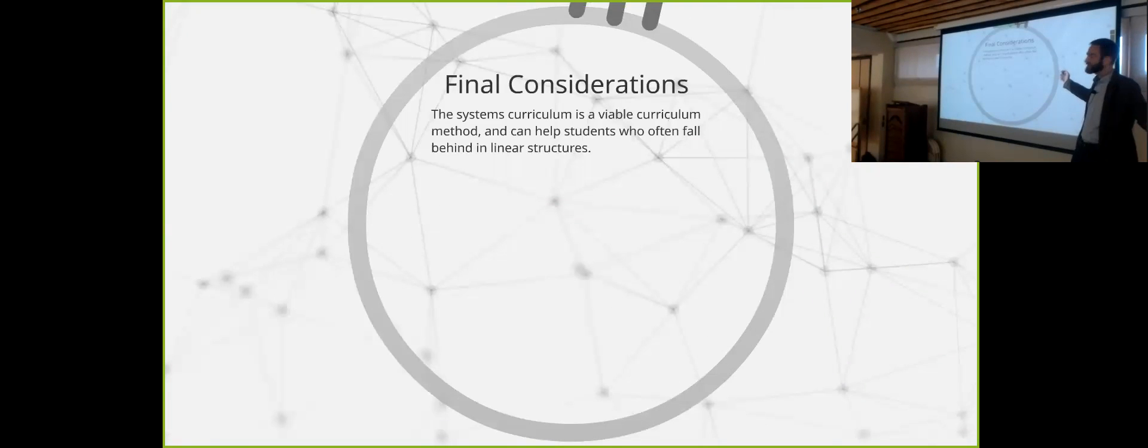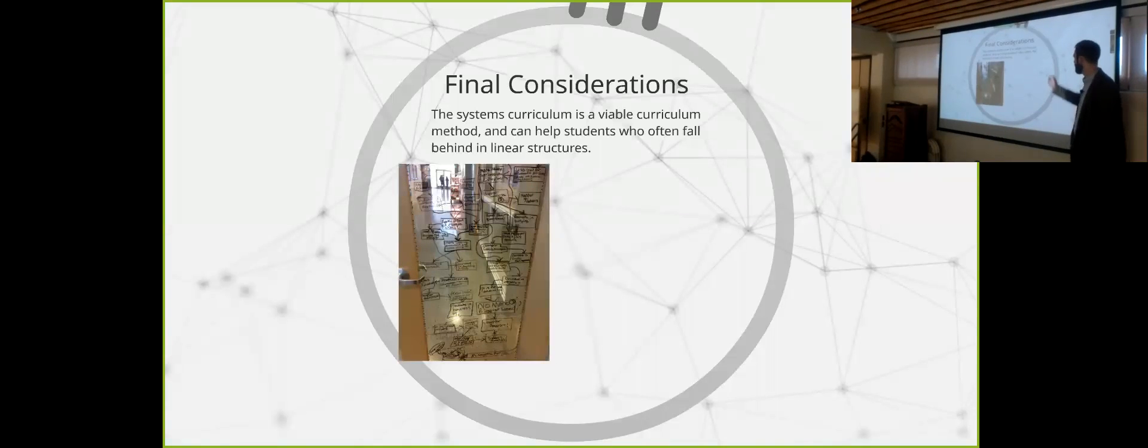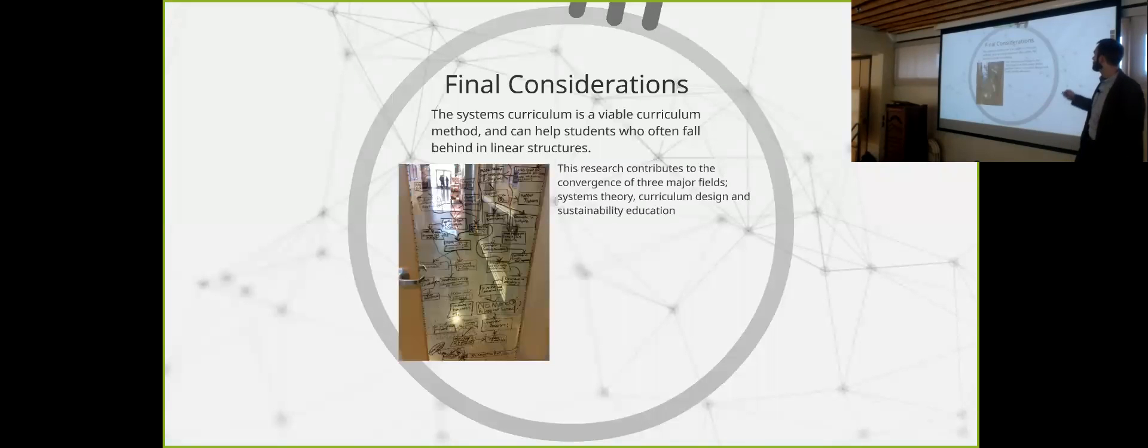This is a viable model. It was awesome. The kids loved it. And this was big for me, that it helped students who fell behind in linear systems. I thought this picture was so cool. I told a kid, look, I need you to go systems diagram me something. I was like, okay. And ran, got an Expo marker, and did that on one of our glass walls. So really cool. I mean, this is not a weird way of thinking. It already is there. You know, I see this research contribute to the convergence of three major fields, systems theory, curriculum design, and sustainability ed. Instead, it offers not only evidence, but it offers a tool. I'm trying to give the field something that people can work with.